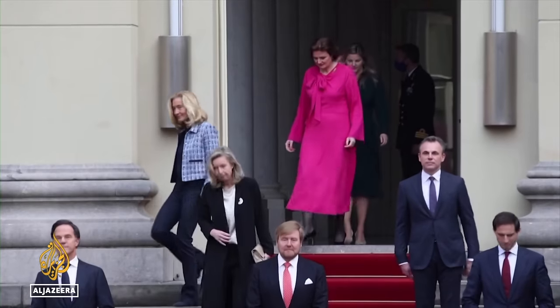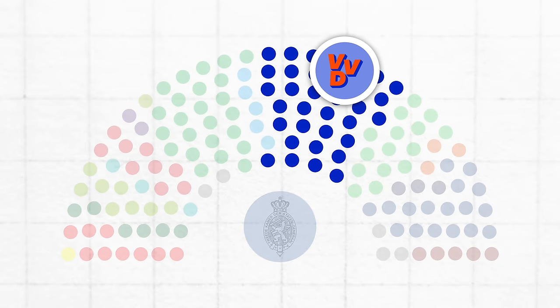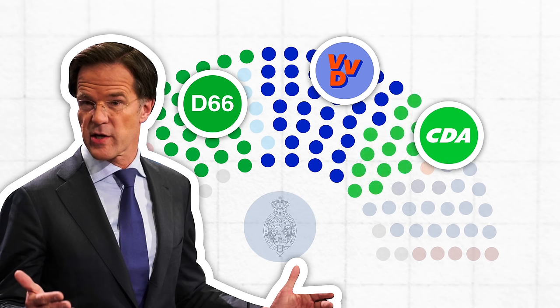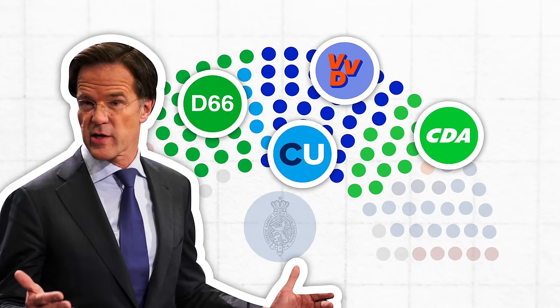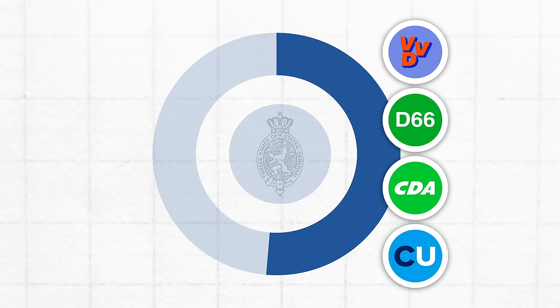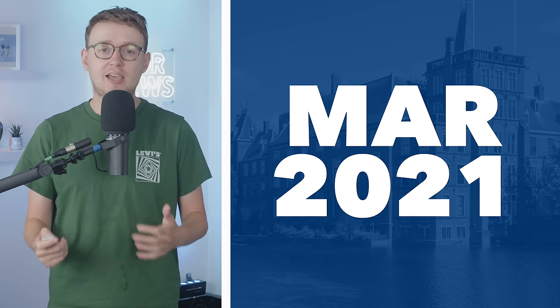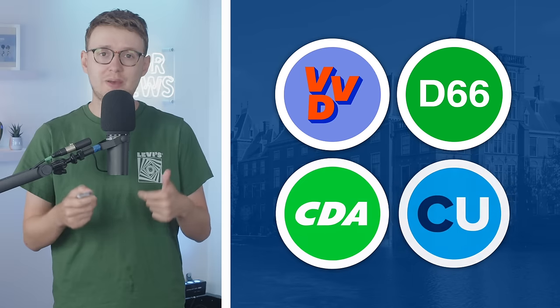First things first, we're going to briefly look at the coalition government that just collapsed. The largest of the four parties in the centre-right coalition is the People's Party for Freedom and Democracy, or VVD, led by Mark Rutte. Then there's Democrat 66, or D66, who are the second largest. The third largest are the Christian Democratic Appeal, or CDA. And the fourth and smallest member is the Christian Union, or CU. Together, this coalition holds 77 seats in the 150-seat lower house, which is a pretty narrow majority. This government was formed after the March 2021 general election, and is actually a continuation of the coalition that was in power before that election.